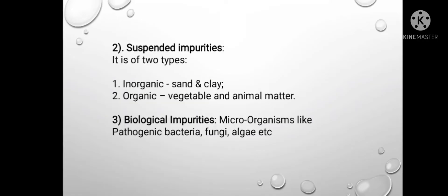Second, suspended impurities — also of two types: inorganic impurities like sand and clay, and organic impurities like vegetable and animal matter. Third, biological impurities — microorganisms like pathogens, fungi, algae, etc. are examples of biological impurities.